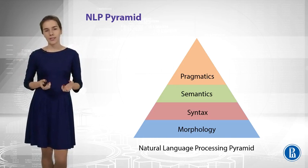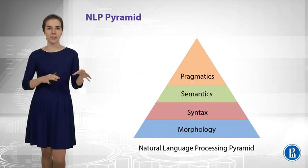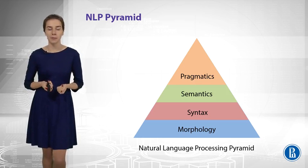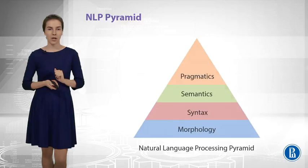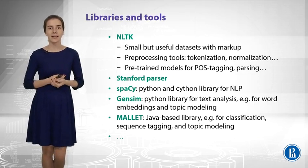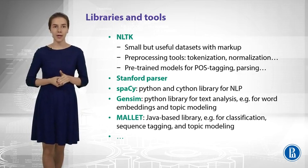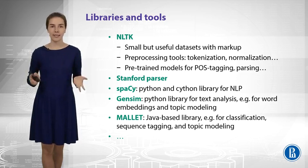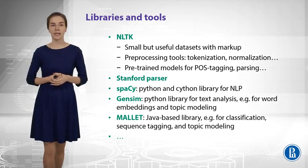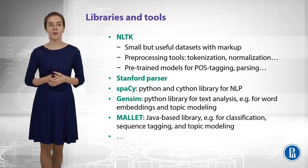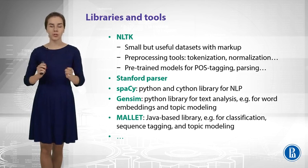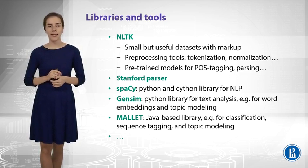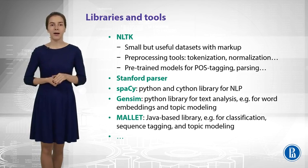One reason why we do not cover all these building blocks in many details later in our course is that you can just use some very nice black box implementations for low-level stages. For example, for morphological and syntactical analysis, you might try using the NLTK library, which is a really convenient tool in Python, so please feel free to investigate it. And another thing I wanted to mention is Stanford Parser — a parser for syntactic analysis that provides different options and has lots of different models built-in.